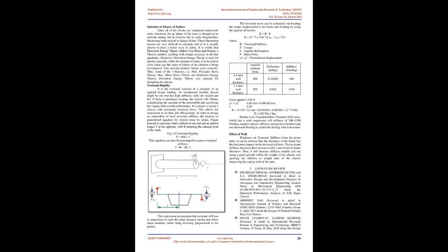Selection of Theory of Failure. Since all checks are performed under static structural conditions, the cross-section of the element is assumed to be uniform throughout. In practice, fluctuating loads can lead to fatigue failure, and these are very difficult to calculate, so it is usually preferable to have a better factor of safety. Distortion energy theory (Huber-von Mises-Hencky theory) predicts yielding with unique accuracy in all four quadrants and is used for ductile materials when the factor of safety is to be held in close limits. Thus, distortion energy theory was selected for designing the chassis.